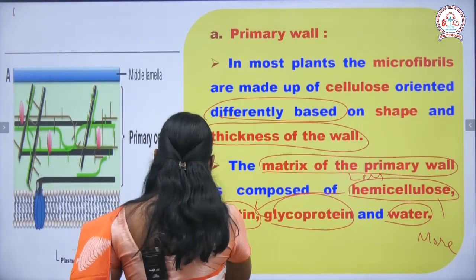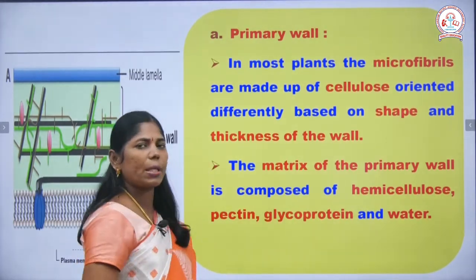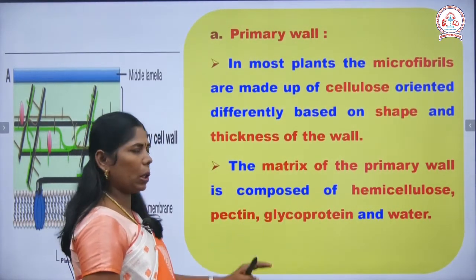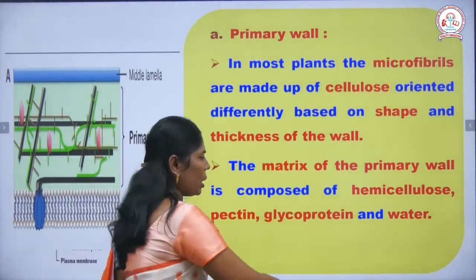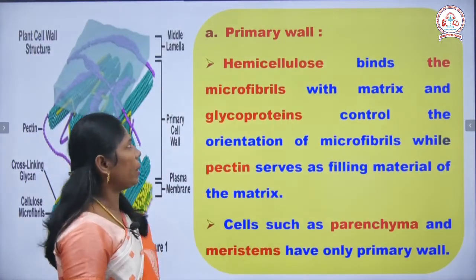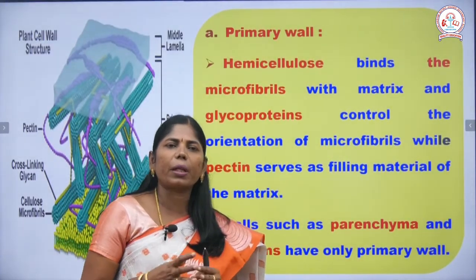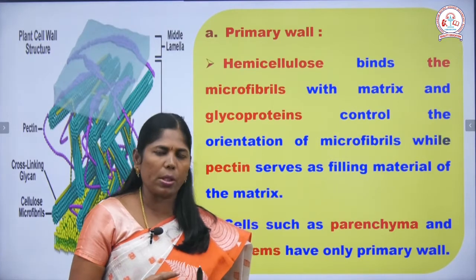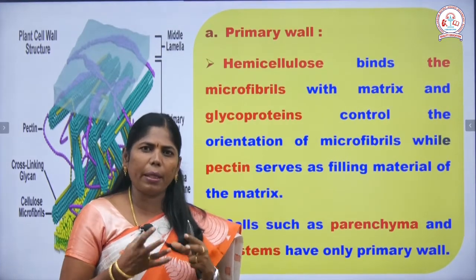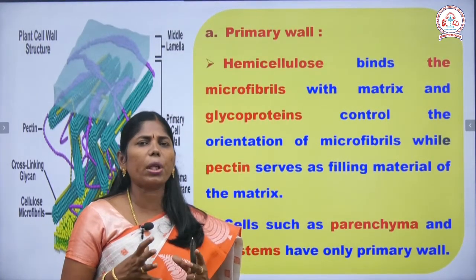The cell wall materials present in the matrix of the primary wall are hemicellulose, pectin, glycoprotein, and water. The functions of these materials: hemicellulose binds the microfibrils, acts as a filler material in the matrix, and pectin provides structural support.